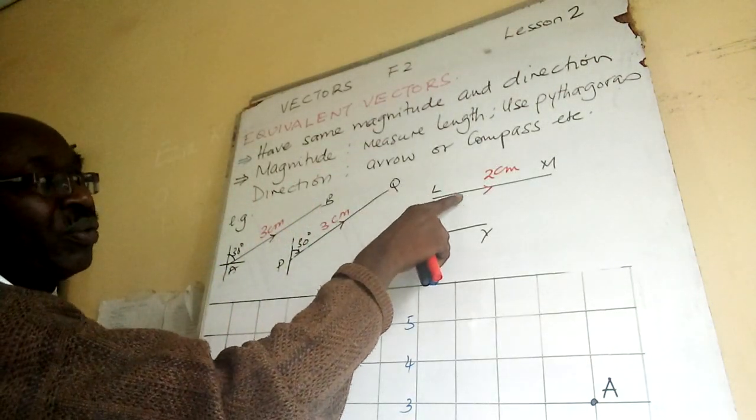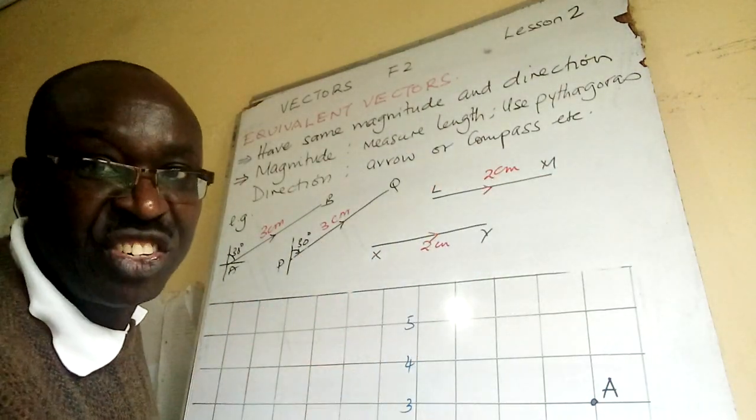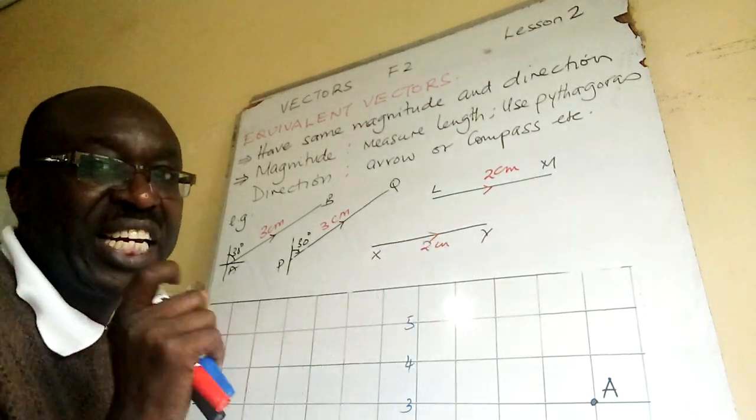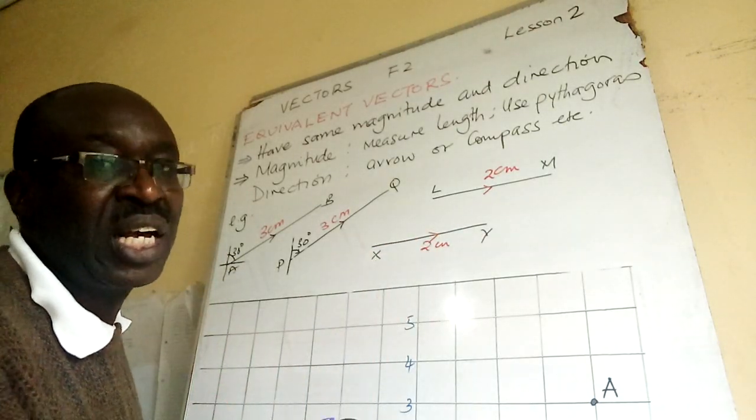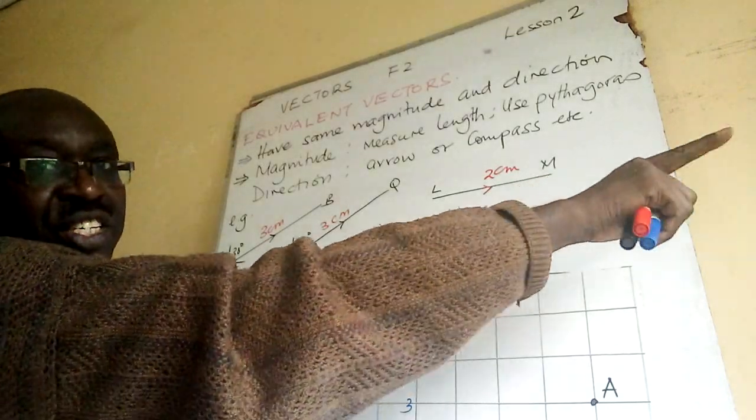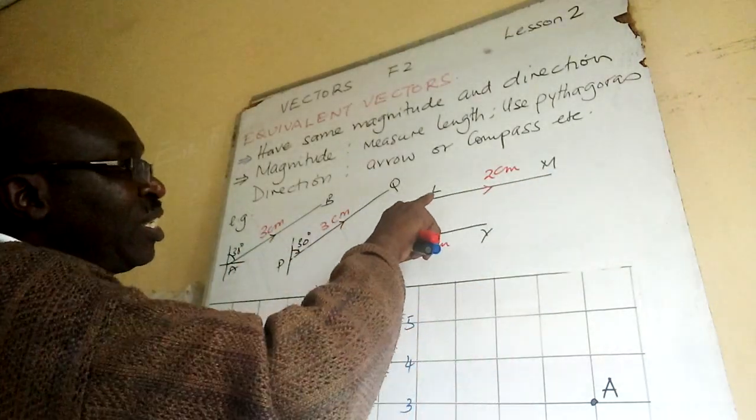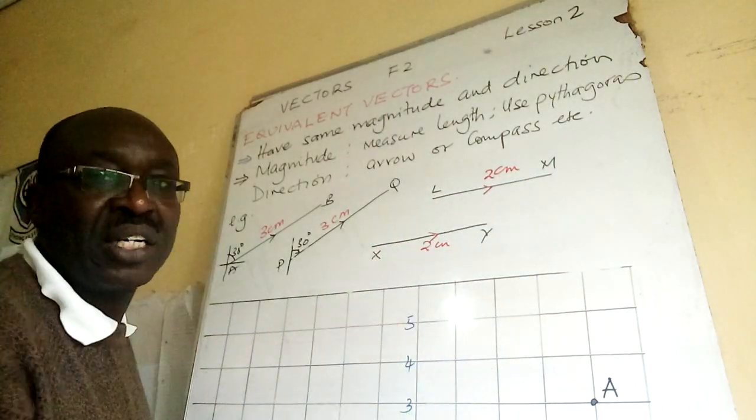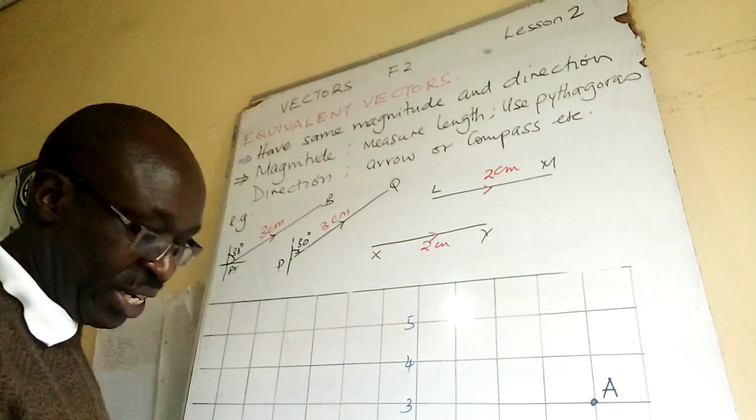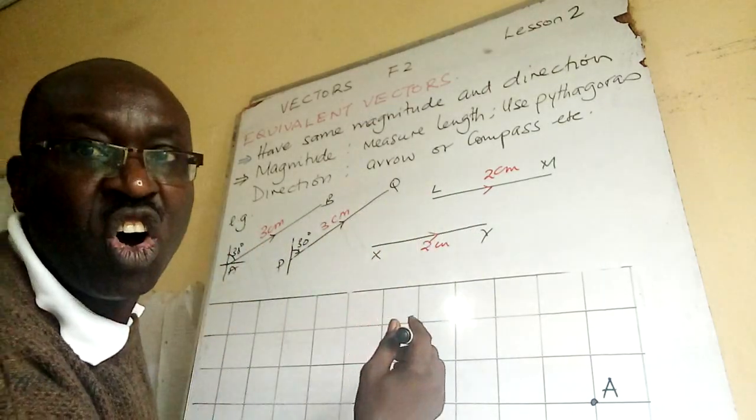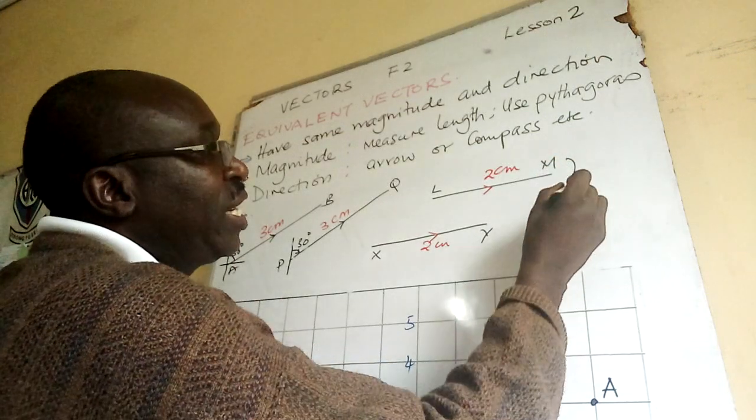Another example: LM in size two centimeters, XY in size two centimeters, and they happen to be towards east, towards right. Then LM and XY are equivalent. And you will not be wrong to have the idea of parallel - LM is parallel to XY.